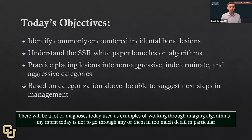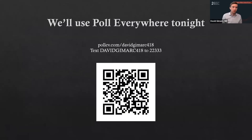One caveat for today: there's going to be a lot of diagnoses we'll go through. I'm going to show a bunch of different cases and different diagnoses, mostly to illustrate how to go through this algorithm rather than going into any specific diagnosis in too much detail. We're going to use Poll Everywhere — here's a QR code. If you scan it, it should take you to my screen. This URL will also work, or you can text in, and the address will pop up on each slide.